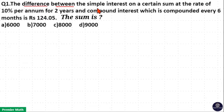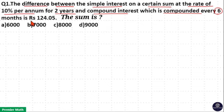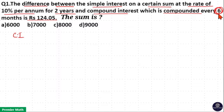The difference between simple interest on a certain sum at the rate of 10% per annum for 2 years and compound interest compounded every 6 months is Rs. 124.05. Whenever you have questions based on the difference in CI and SI, always calculate CI first. Here, compounded every 6 months means every 6 months interest is added to the principal.